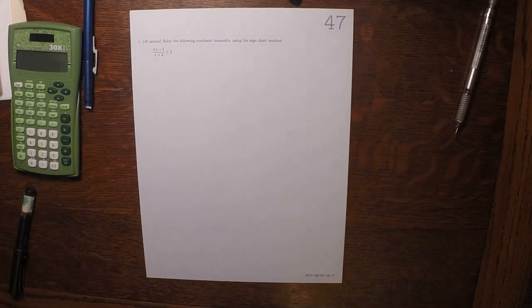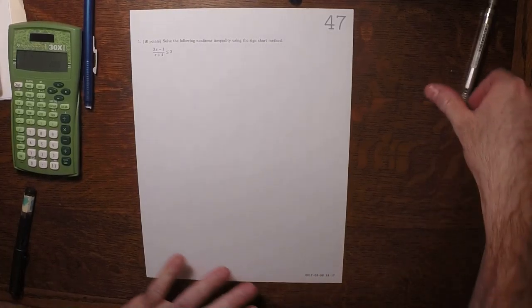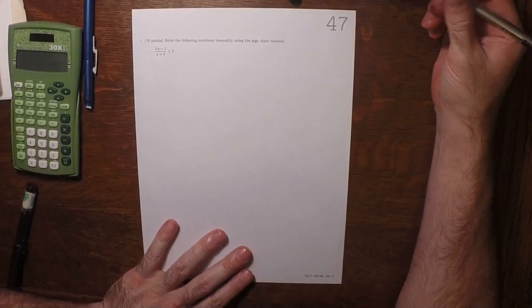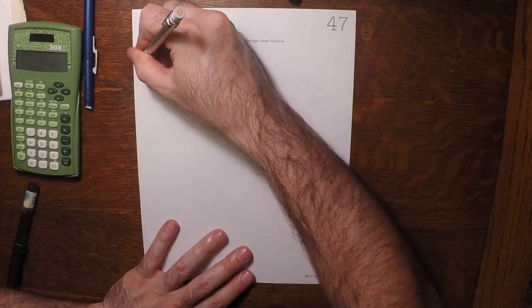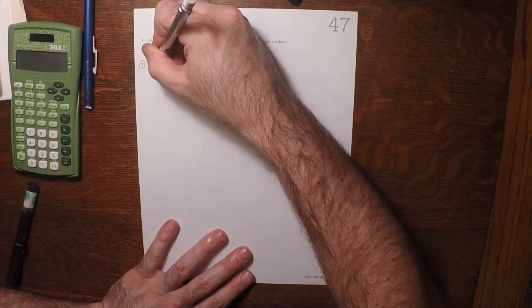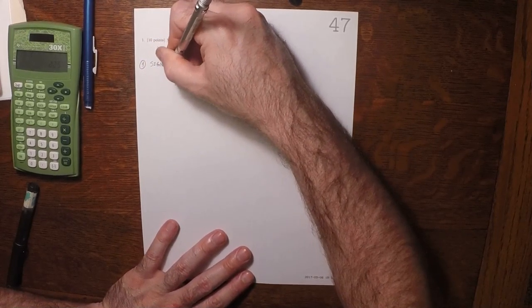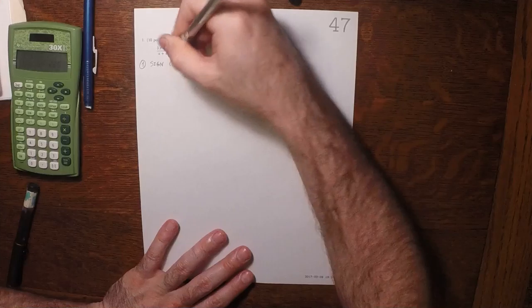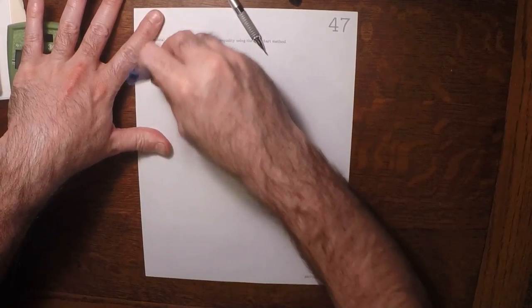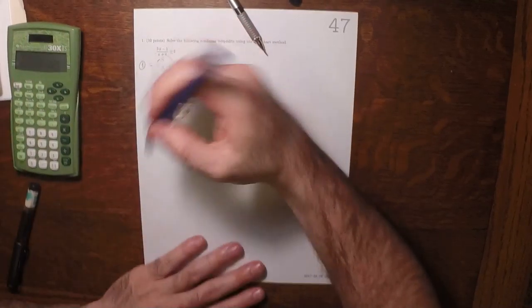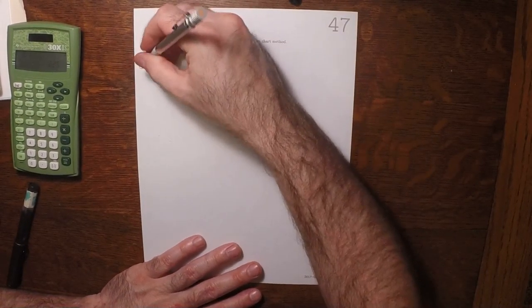This is the solution to Written Homework 47. The first step in the sign chart method is to find the natural domain.